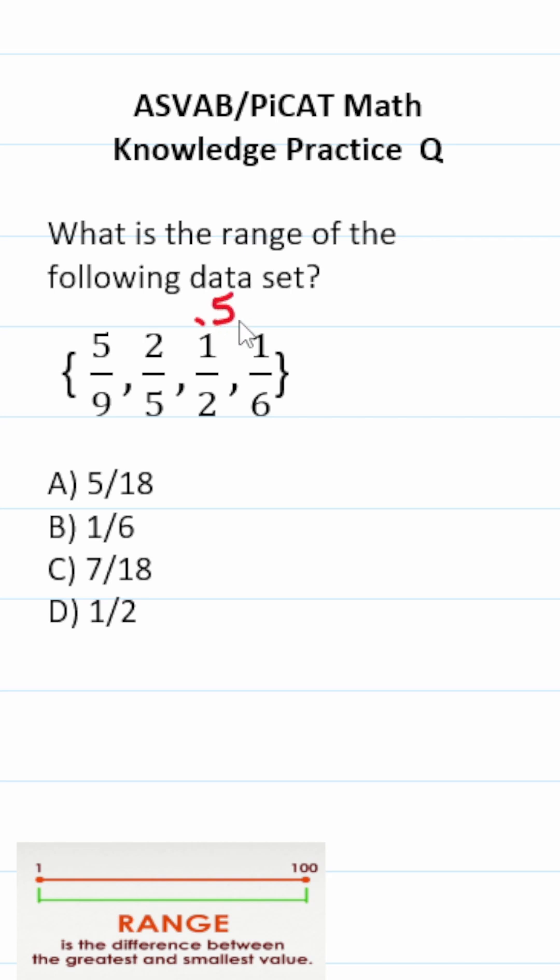One half is 50%. Two fifths is 40%. Five over nine is going to be bigger than 50%. So far, this is our biggest value. And one sixth is about 16%. So we're going to do five over nine, our biggest value, minus one over six, our smallest value.